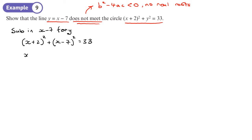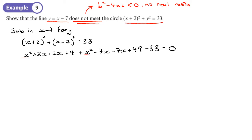Expanding the brackets: x squared plus 4x plus 4 plus x squared minus 14x plus 49, then bringing the 33 across. Collecting terms: 2x squared minus 10x, and 4 plus 49 minus 33 equals 20, giving 2x squared minus 10x plus 20 equals 0.